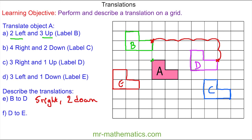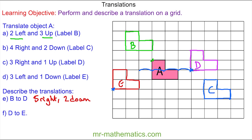Do you want to try and describe the translation that maps D onto E? You can pause the video and resume when you're ready. We'll pick a vertex on D and match it with a vertex on E — horizontally first: one, two, three, four, five, six to the left — and then vertically two down. Thank you for watching, I hope you found that useful. Thanks again and take care.